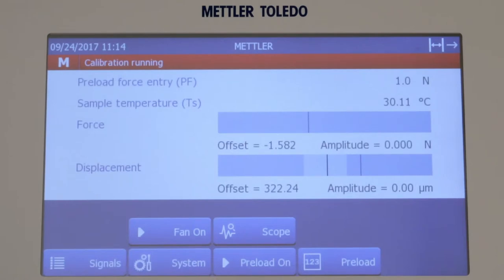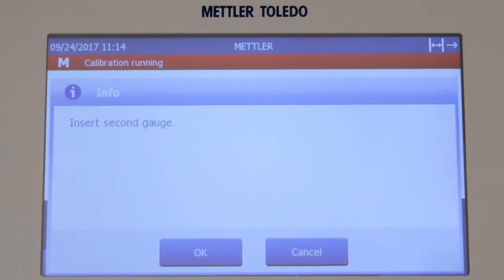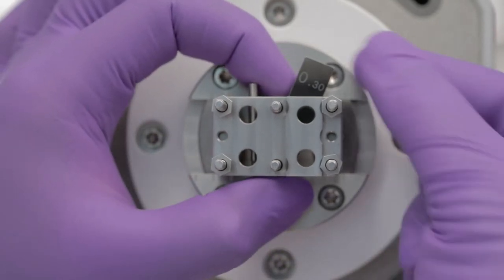The first adjustment parameter is calculated and stored. The message Insert Second Gauge appears. Carefully remove the gauge block.